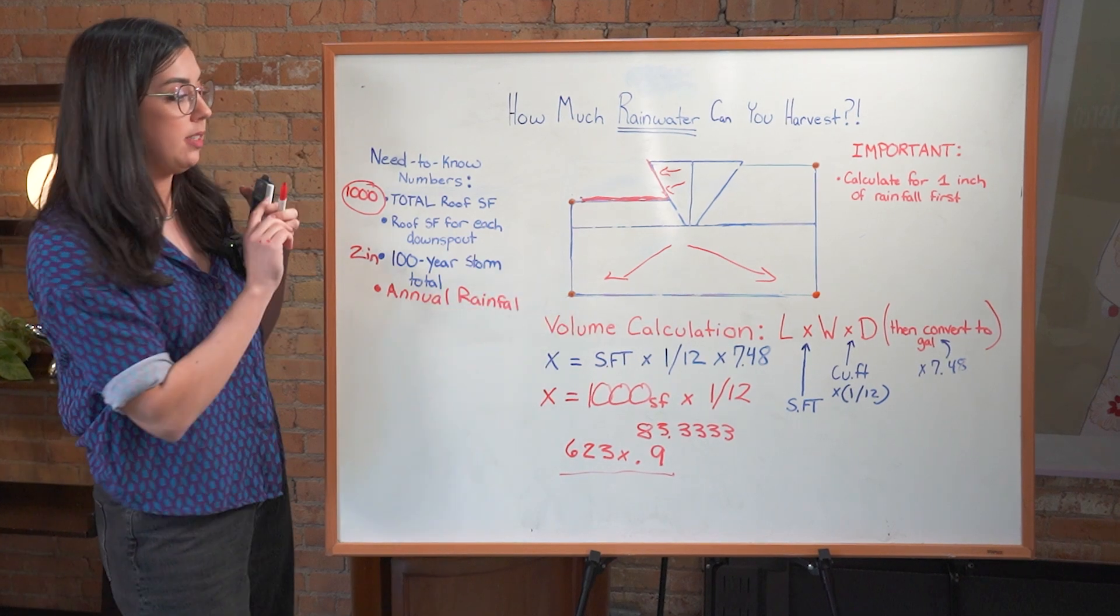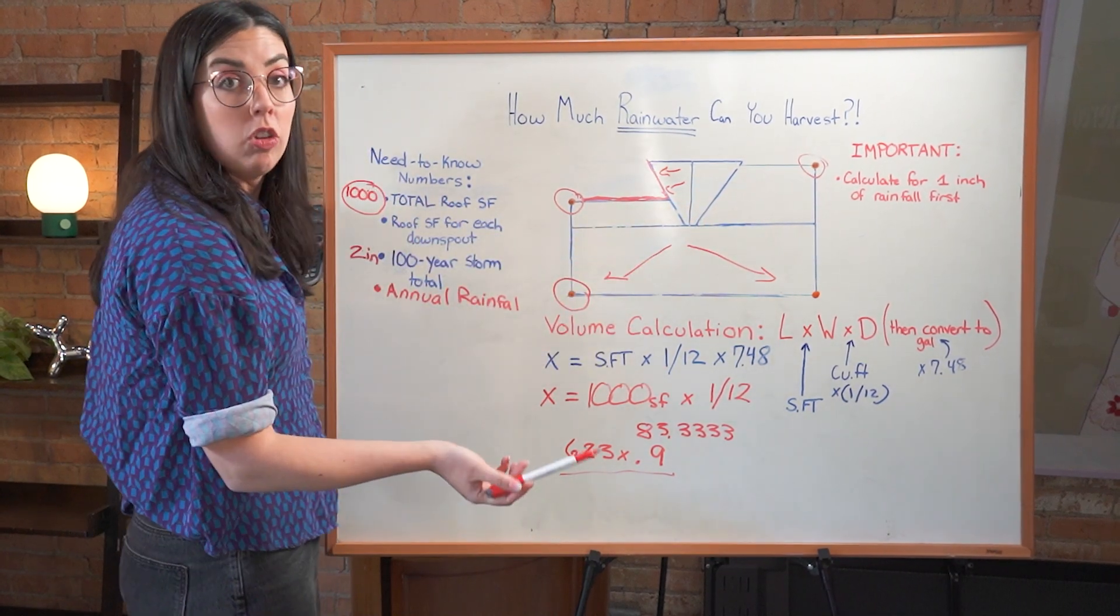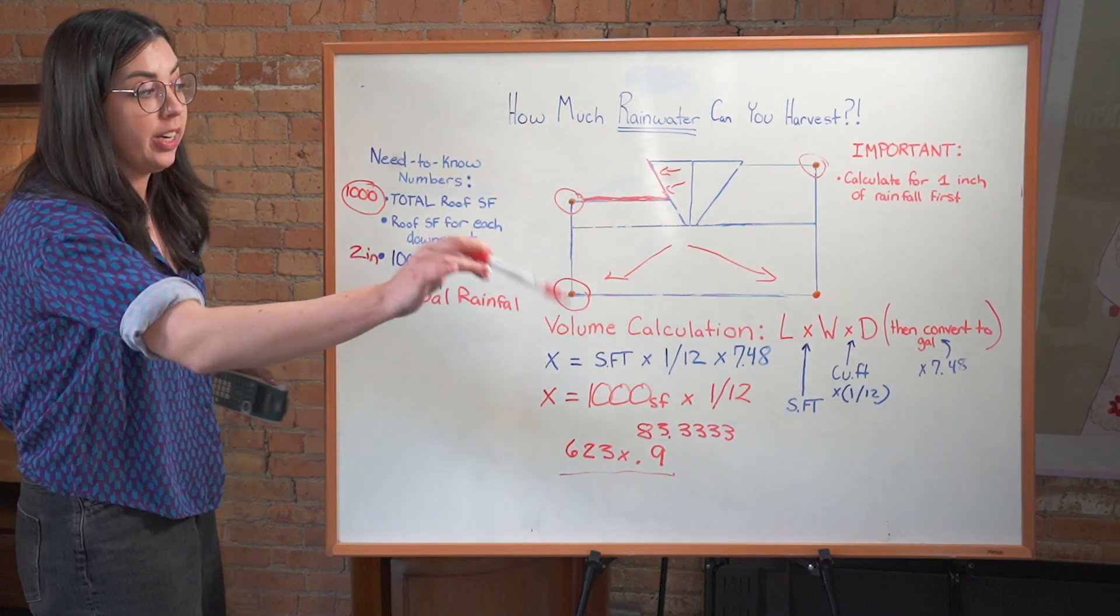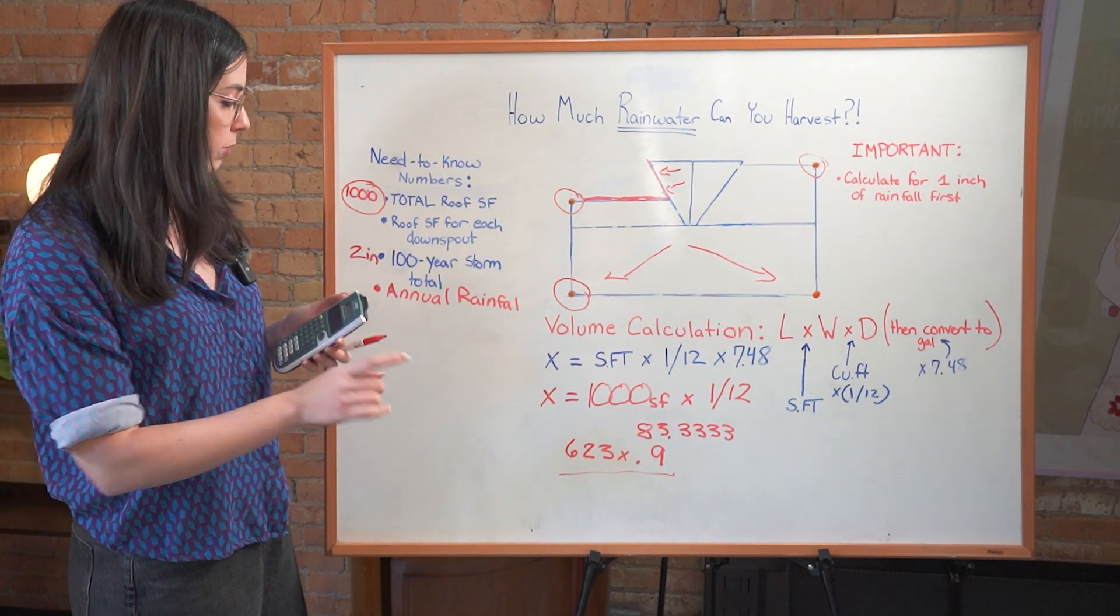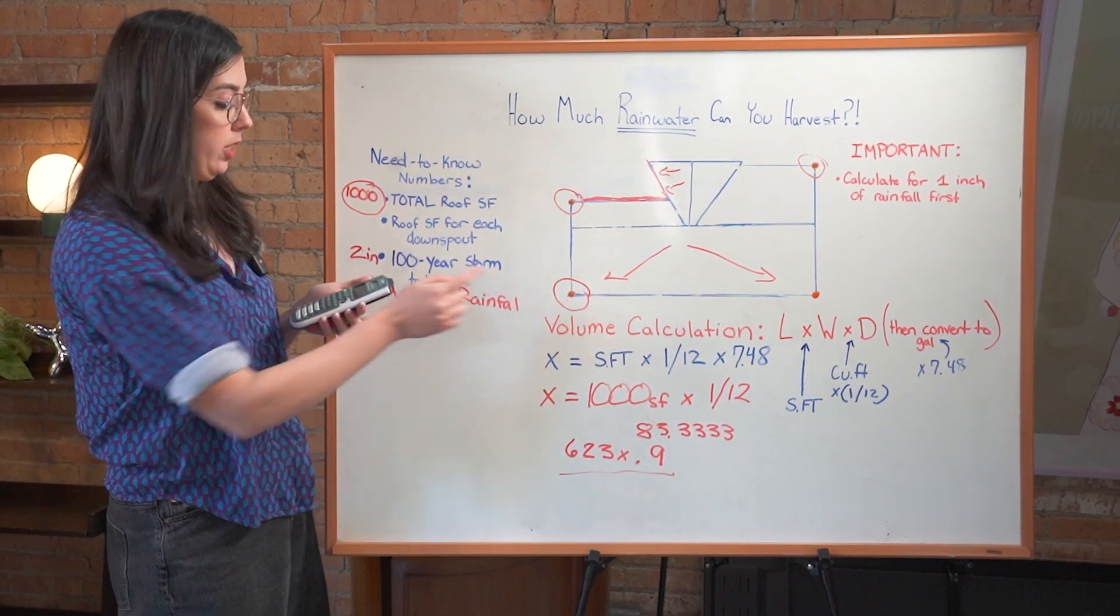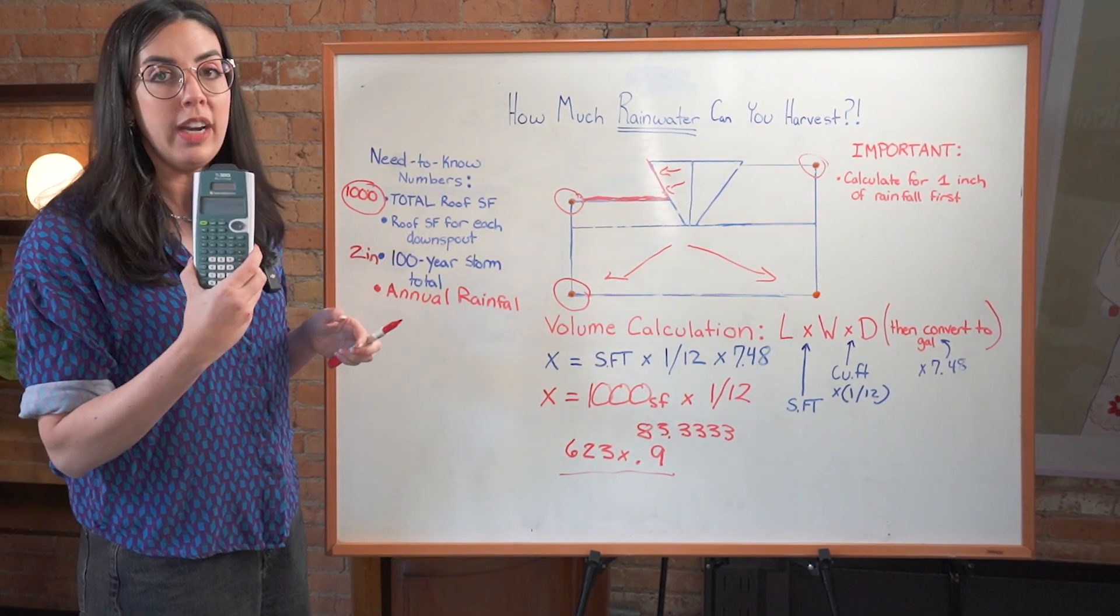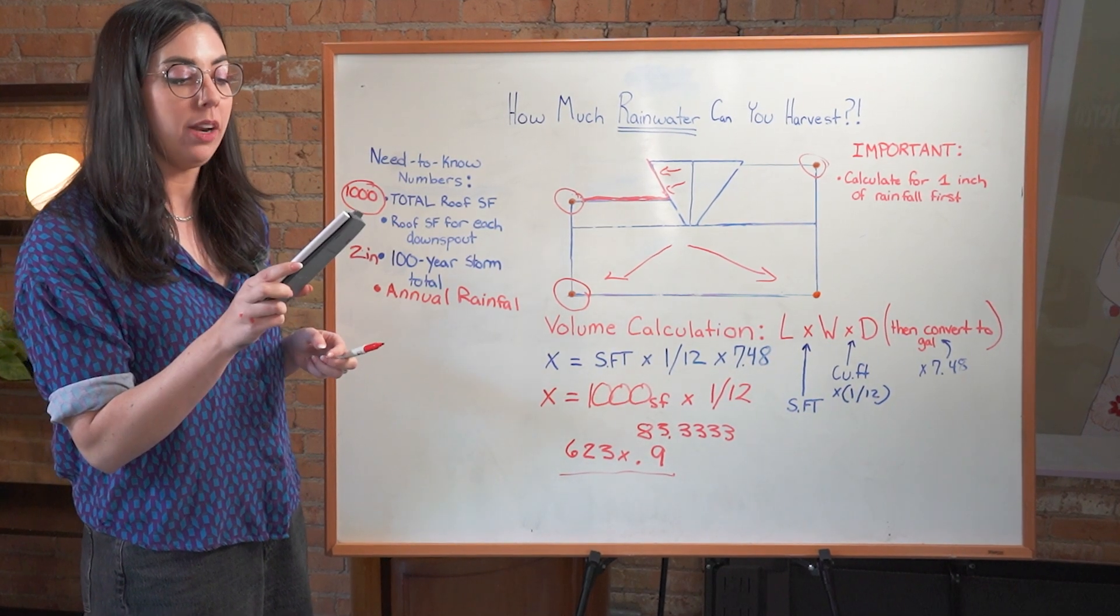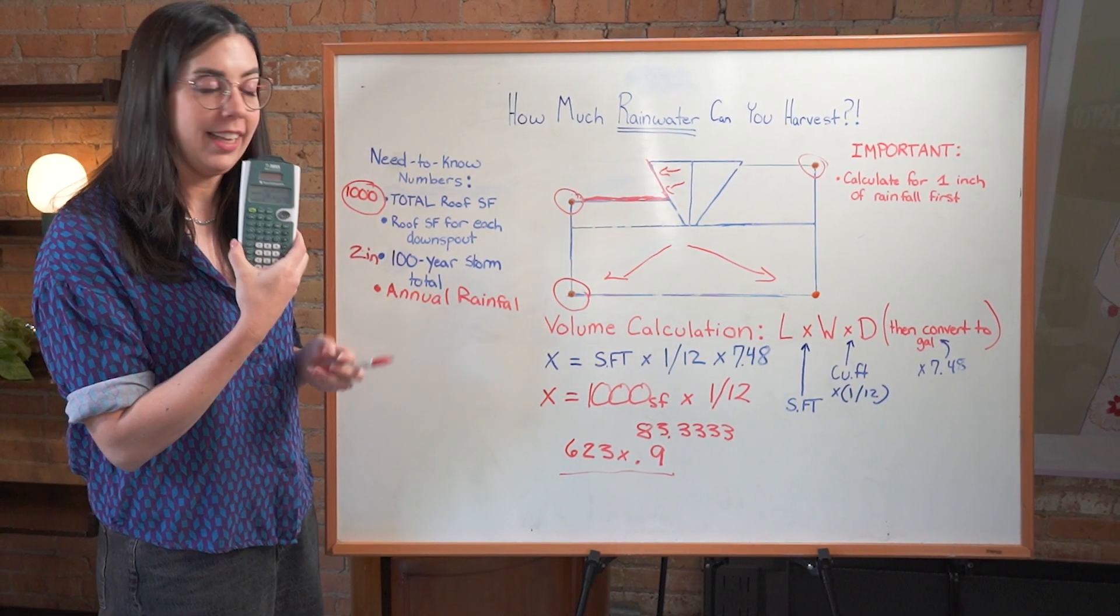So you would do the same thing, and just to walk you through it so that we all feel comfortable for each downspout, because it's important to know that this downspout is going to be harvesting a different amount than this one and a different amount than this one. And that might reflect where you put your giant 600 gallon barrel versus maybe going straight into a passive system and not even using a barrel at all on a different downspout. Do this with me using your own square footage. X, that's what we're solving for, equals square feet times 1 over 12. 250 square feet going to this downspout times 1 over 12, or 1 divided by 12, 20.8 cubic feet. We multiply that by 7.48, 155 gallons. If you have a metal roof, leave it at that. If you have an asphalt shingle roof, multiply that by 0.9, 140 gallons to this downspout.